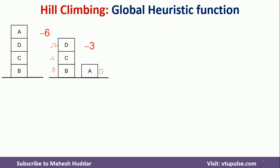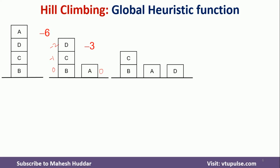Now there are two possibilities: move D to the ground or D on top of A. If I move D to the ground, below B and D nothing is there, so zero each. Below C, one block is incorrectly placed. Below A, nothing is there, so zero. The total value is minus one. This is better than the previous state, so we will consider it.